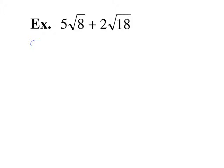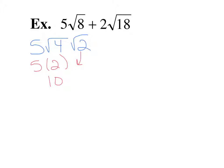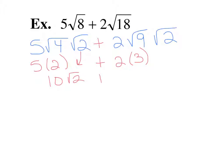For 5 square root of 8 plus 2 square root of 18: simplifying 5 square root of 8 — 8 is 4 times 2, square root of 4 is 2, multiplied times the 5 gives 10 square root of 2. Simplifying 2 square root of 18 — 18 is 9 times 2, square root of 9 is 3, multiplied times the 2 gives 6 square root of 2. They are now like radicals; adding coefficients, 10 plus 6 is 16 square root of 2.